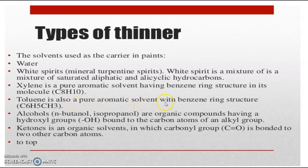Next, alcohols — in which we use n-butanol and isopropanol majorly. These are organic compounds having a hydroxyl group as a functional group bound to the carbon atoms of an alkyl group. Ketones are organic solvents in which a carbonyl group (C=O) is bonded to two other carbon atoms. These are the types of thinners.